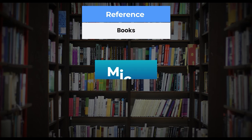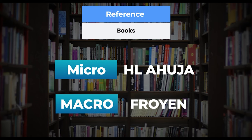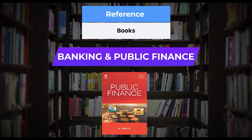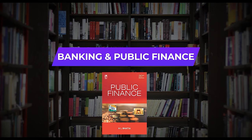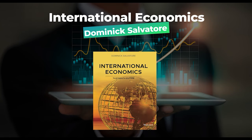The Plutus notes stick to the syllabus and also provide detailed explanations. If we talk about reference books specifically: for micro, HL Ahuja; for macro, Froyan is a good book. For banking and public finance, HL Bhatia — an Indian author — covers public finance elaborately. For international economics, Dominic Salvatore is a well-renowned book.